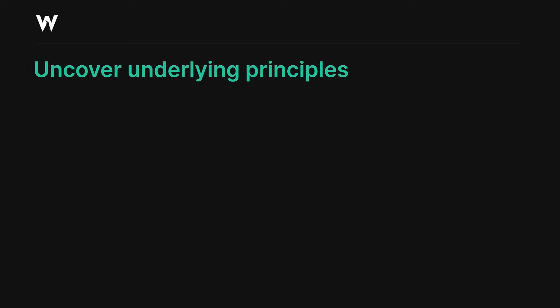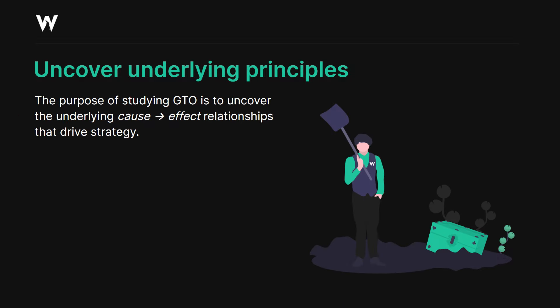My first tip is to try and uncover underlying principles. The purpose of studying GTO, in my opinion, is to uncover the underlying cause-effect relationships that drive good strategy. We want to figure out why rather than what — we want to know the reason behind betting a hand rather than just knowing that a hand is betting. Solution browsers give us the answer but don't tell us why. Uncovering why is important because once you know why, you can apply it to a much wider range of situations and take that same principle to boards you're unfamiliar with.